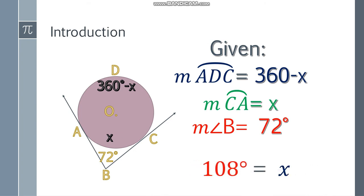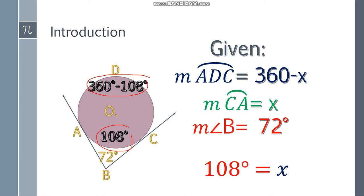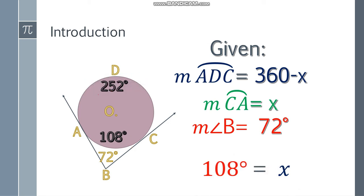So did we get the answer? Not yet. This is just the value of X. We're going to substitute the value, the 108 degrees here. So when we substitute it, this 108, this is 360 minus 108. So 360 minus 108, that will be 252 degrees.